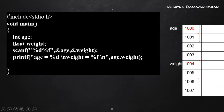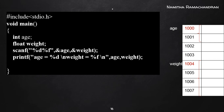Inside main, there is a declaration of one integer type variable 'age' and a floating point type variable 'weight'. Since age is of type int, it occupies two consecutive bytes and points to the first byte address at 100. Weight is of type float, so it occupies four consecutive bytes, with &weight pointing to location 1004.